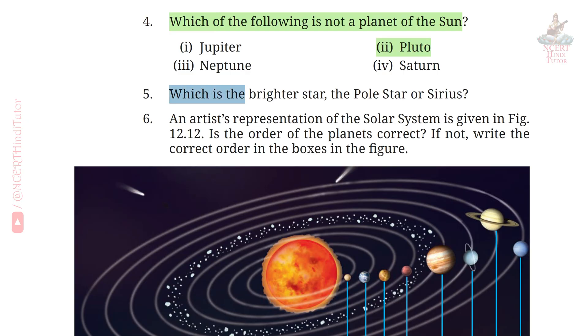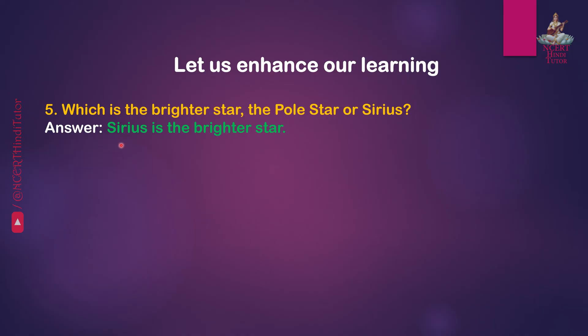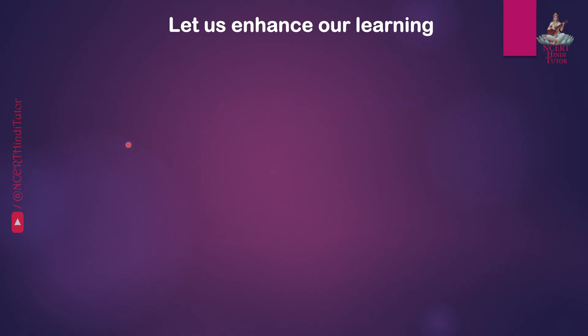Question 5: Which is the brightest star — the pole star or Sirius? Answer: Sirius is the brightest star.